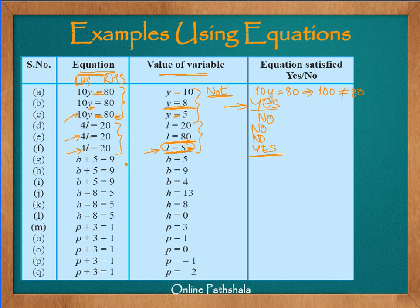Similarly, for the equation B plus 5 equals 9: what happens if I put B equals 5? Then 5 plus 5 on the left hand side gives me 10, which is not equal to 9, so this does not satisfy. What if B equals 9? Then 9 plus 5 gives me 14 — that also does not satisfy. But when B equals 4, then 4 plus 5 is 9 on the left hand side and 9 equals 9. So the solution is B equals 4.